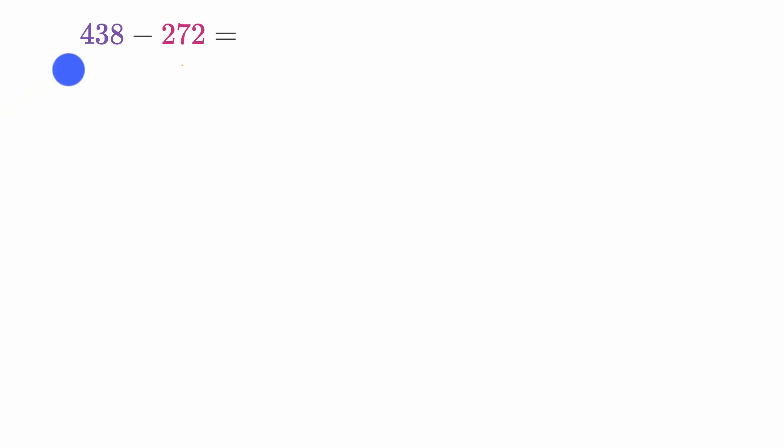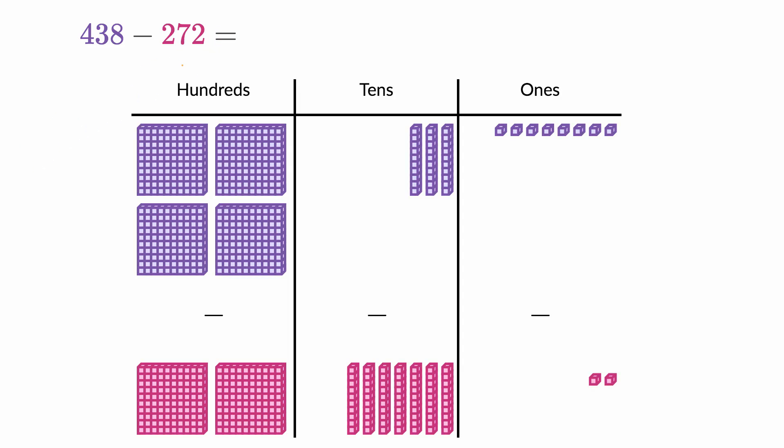What we want to do in this video is figure out what 438 minus 272 is. And to help us think about that, we have these place value blocks right over here. And so you can see 438, we have 400s.